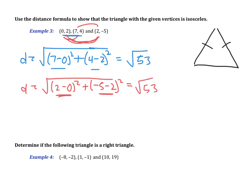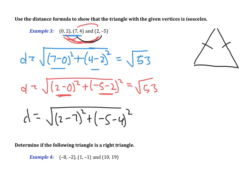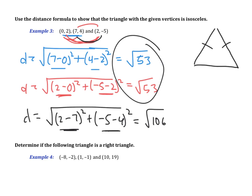Two of the distances are the same, so we know we have an isosceles triangle. For completeness, let's do the last pair: d equals the square root of (2 minus 7) squared plus (negative 5 minus 4) squared, giving 25 plus 81, or the square root of 106. So we don't have an equilateral triangle, but we do have an isosceles triangle because two of the lengths are the same.